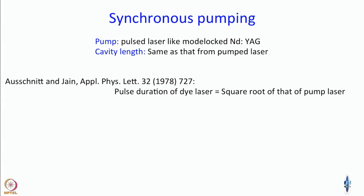It's not very difficult to produce a pump laser which has say 20, 30, or 50 picosecond full width at half maximum. If you have a 25 picosecond pulse width laser used for pumping, automatically the output of the dye laser is going to be 5 picosecond — square root of that of the pump laser. If you are interested, please read this APL paper from 1978.